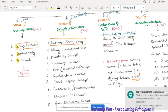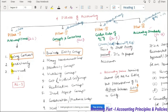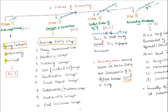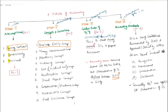To start chapter two, we have proceeded with a different approach which we call the four pillars of accounting. Pillar one is assumptions, pillar two is concepts and conventions, pillar three is golden rules of accounting, and pillar four is accounting standards. Pillar one and two will be covered in chapter two, pillar three is journal entries in chapter five, and accounting standards is chapter three.